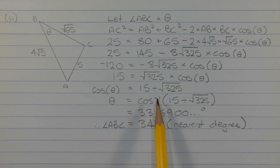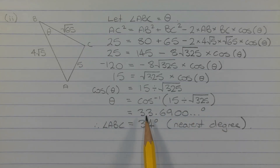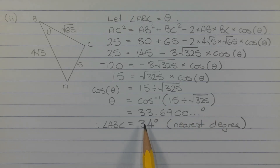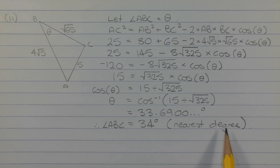Taking the inverse cos of both sides to make theta the subject, we get theta equals inverse cos of 15 divided by root 325, which equals 33.69 degrees and so on, which rounds to 34 degrees. Therefore angle ABC is equal to 34 degrees correct to the nearest degree.